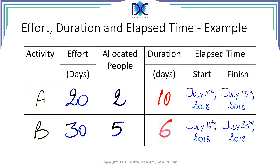Let's look at some examples. We have activities A and B. Effort for activity A takes 20 periods — in our case, days. We allocate two people, so the duration of that activity will be 10 days. When we start this activity on Monday, July 2nd, 2018, the activity finishes on July 13th, which is more than 10 days. The reason is simple: there is one weekend included in that period and the project doesn't continue during the weekend, so the elapsed time is 12 days instead of 10.